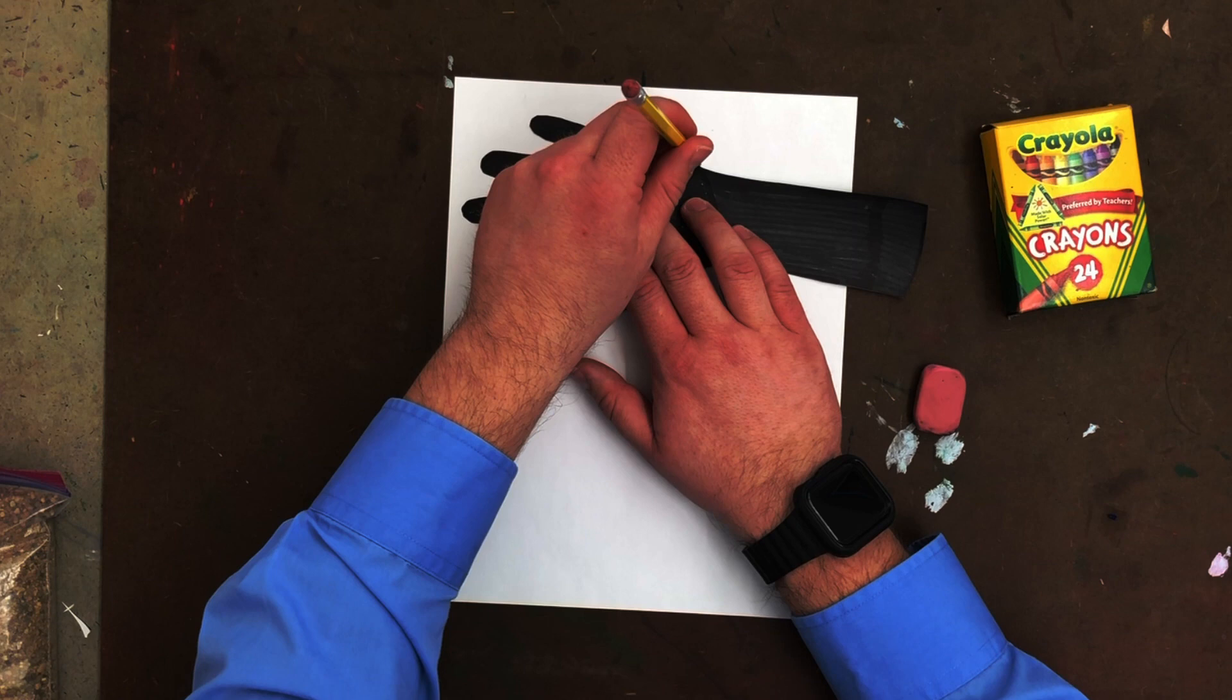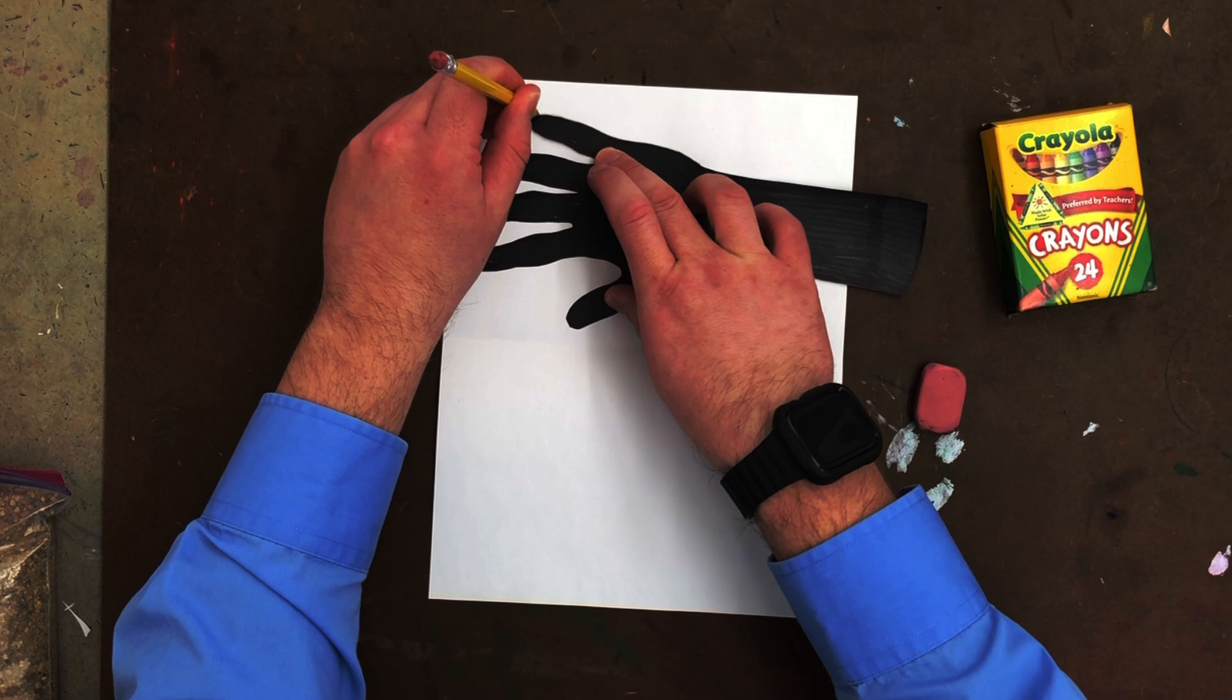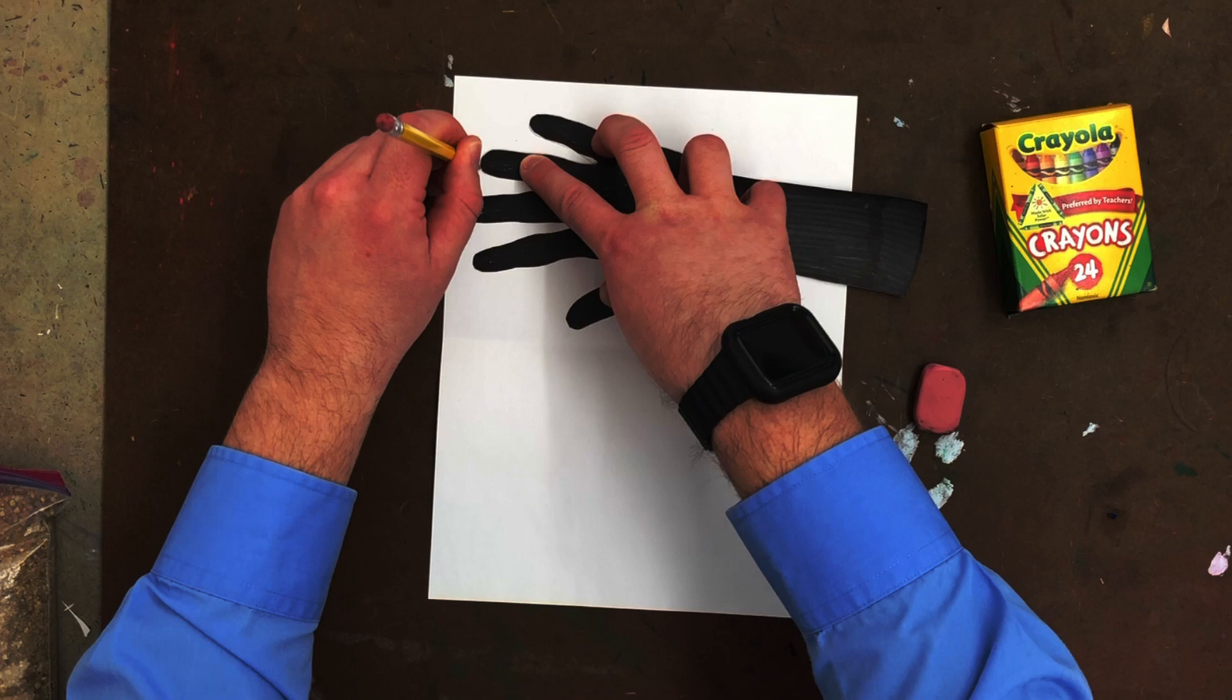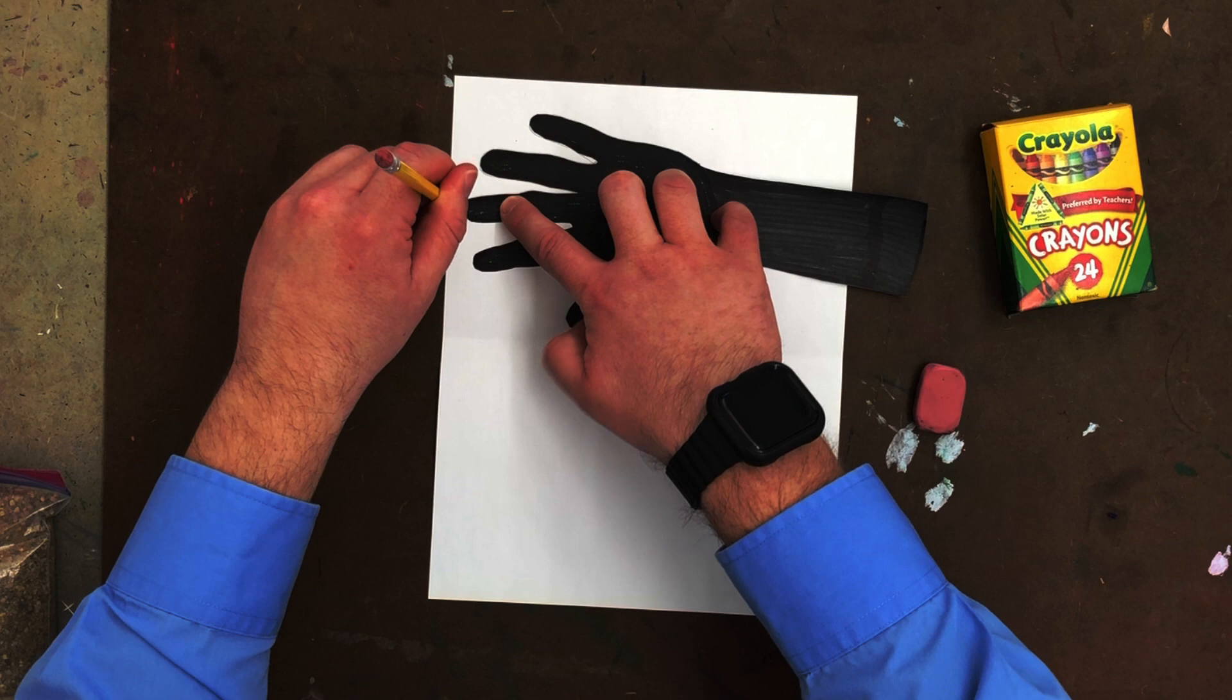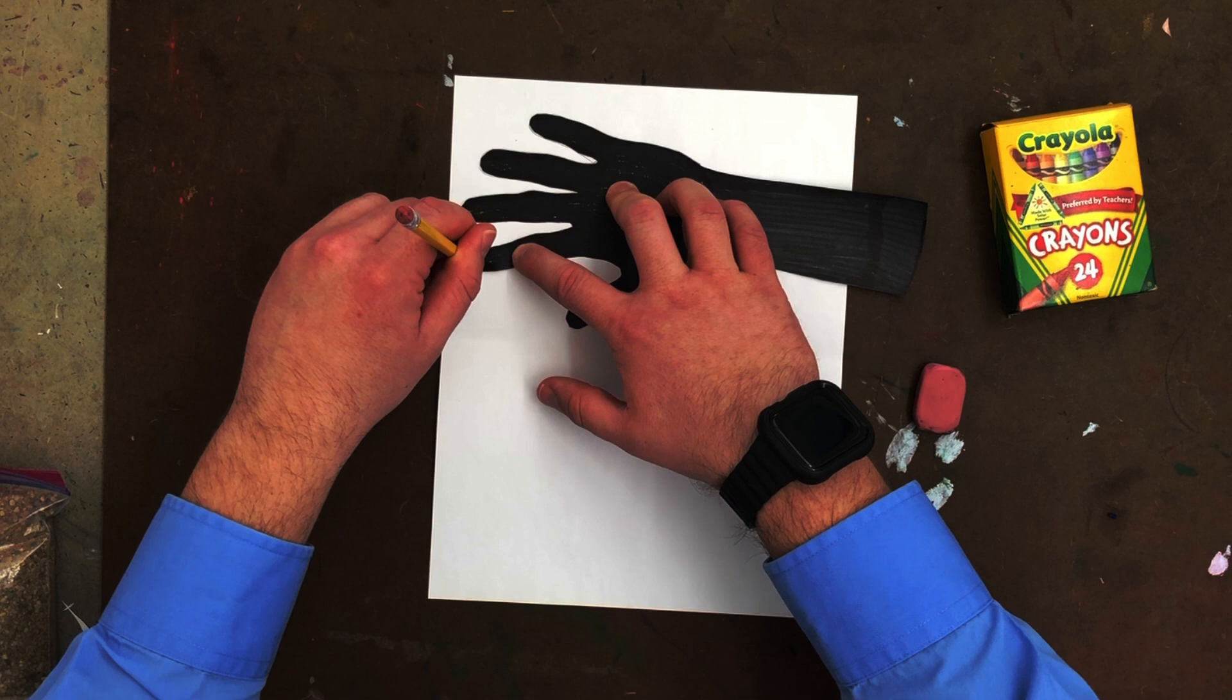I'm going to trace this hand. Now remember, you're actually tracing your real hand. My hand is too big, so I had to make a paper one that would fit. Make sure to take your time and make it look good. Don't be sloppy with your tracing.